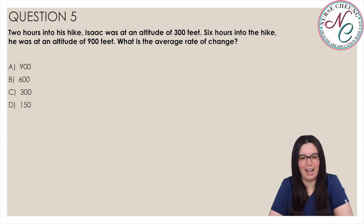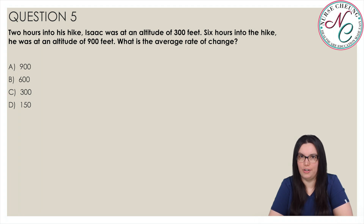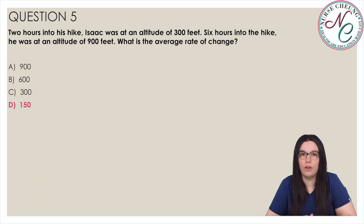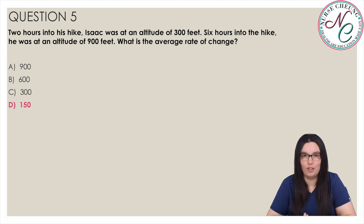Question 5. Two hours into his hike, Isaac has an altitude of 300 feet. Six hours into the hike, he is at an altitude of 900 feet. What is the average rate of change? Is it A, 900; B, 600; C, 300; or D, 150? The correct answer is D, 150. To evaluate this, we use the slope formula. The Y values are the altitude and the X values are the hours. So we have 900 minus 300 over 6 minus 2, giving us 600 over 4, which equals 150.